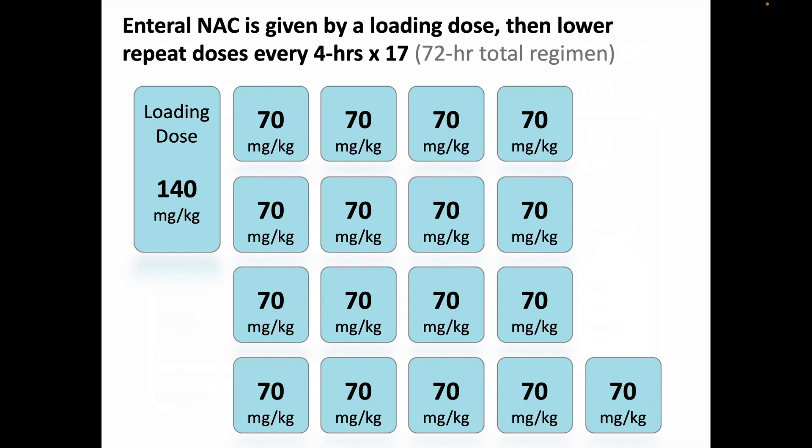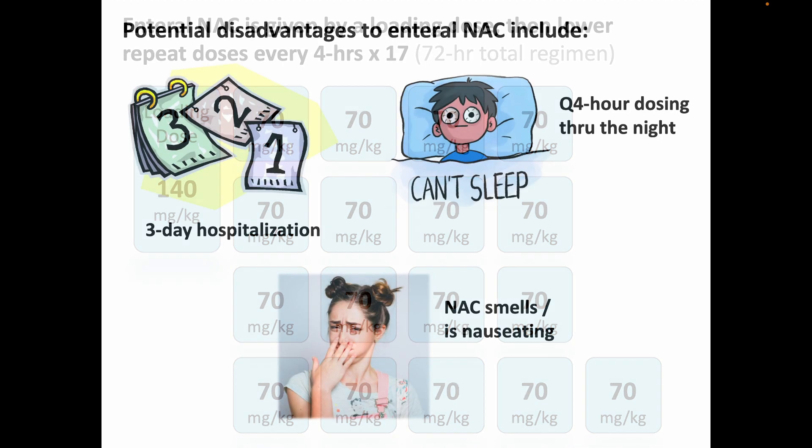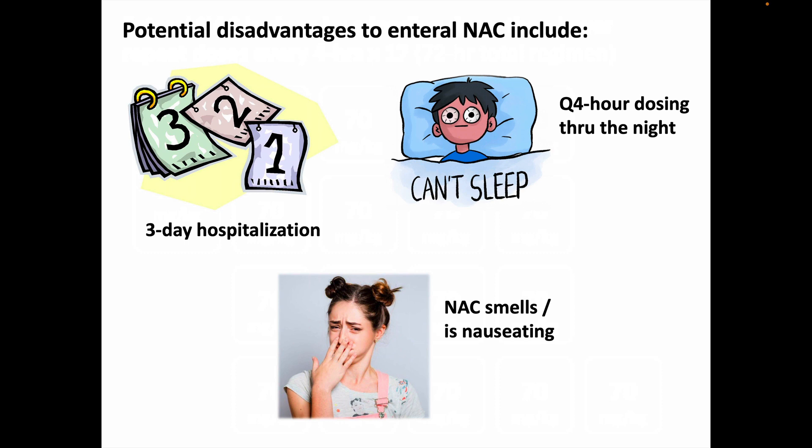Here is the FDA-approved dosing regimen for enteral NAC. The patient is given a loading dose of 140 mg per kg N-acetylcysteine, and this is followed by 17 more doses of 70 mg per kg NAC given every 4 hours, for a total treatment regimen lasting 72 hours — 3 days.